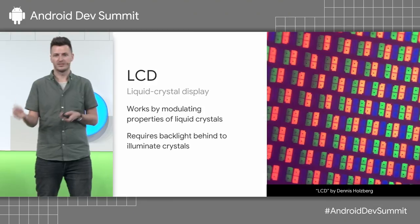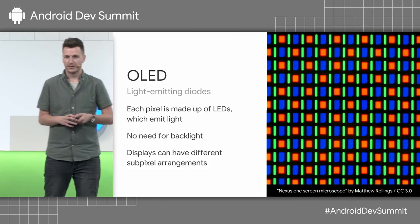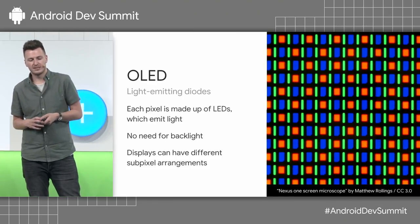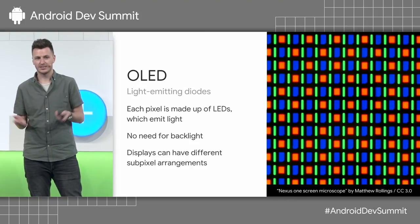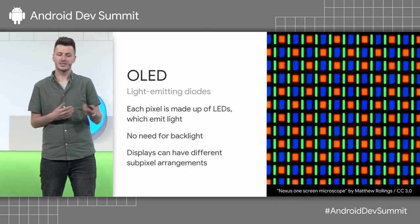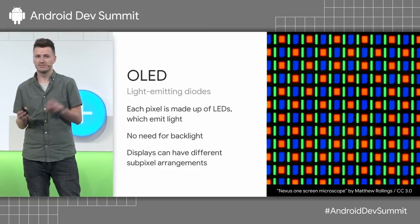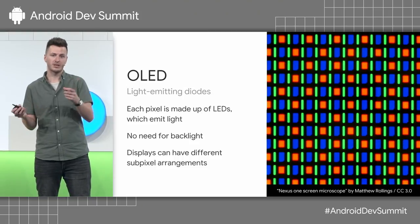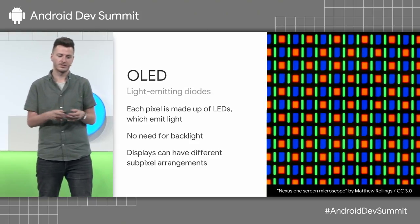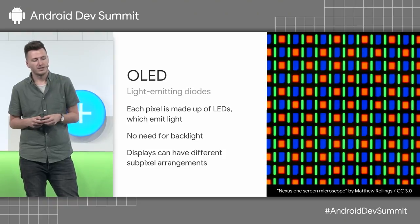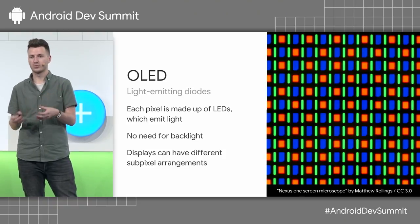So more brightness means more power. OLED displays are light-emitting diodes, which actually emit light themselves — so there's no need for a backlight. Each pixel will illuminate itself, and that's how the light shines out. The good thing here is that they allow a true black.